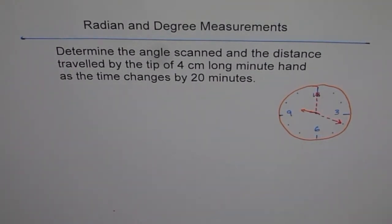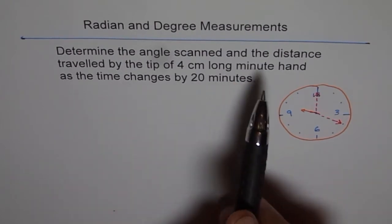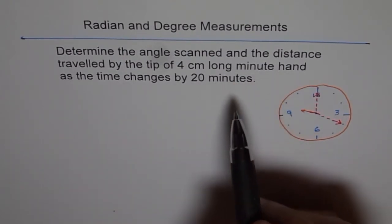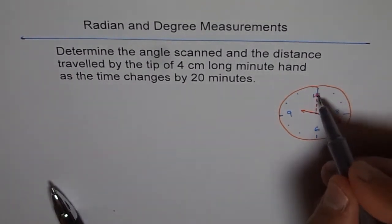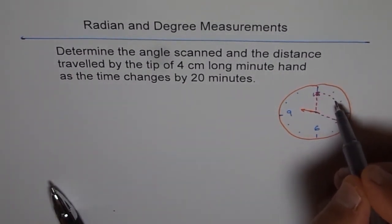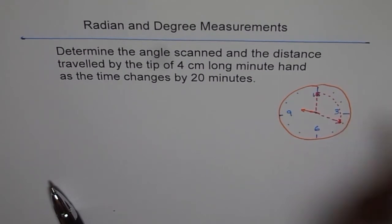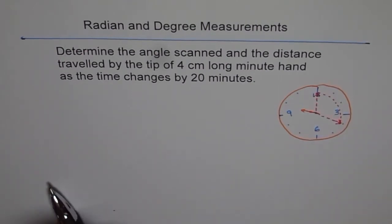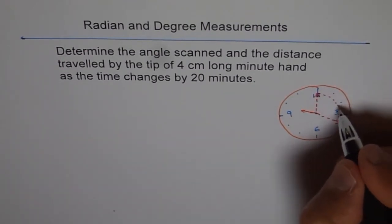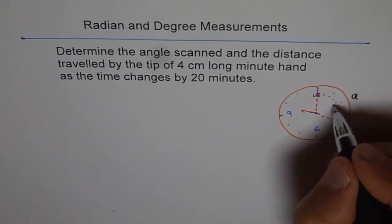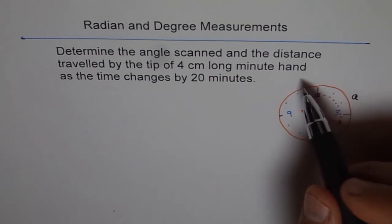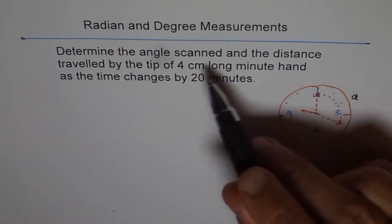Now, the question is, first, you need to find the distance traveled by the tip. The distance traveled by the tip will be this distance. Distance traveled by the tip. Let me call this as A. So, the arc length. Right? And the angle scanned.